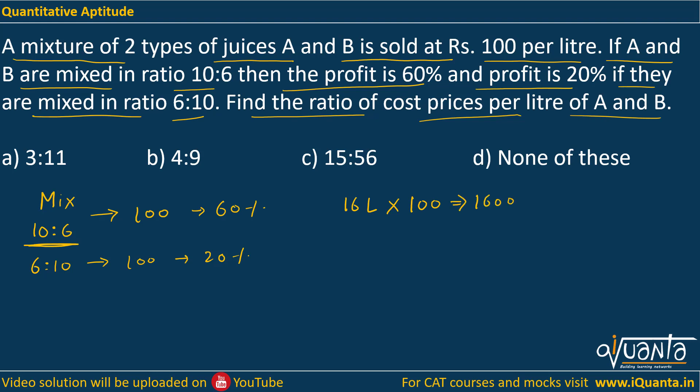In the second case also we are selling 6 litres of juice A, 10 litres of juice B at Rs. 100 per litre. So again we have total 16 litres of juice and Rs. 100 per litre is the price, so again 1600 is the SP. So SP is same in both the cases.